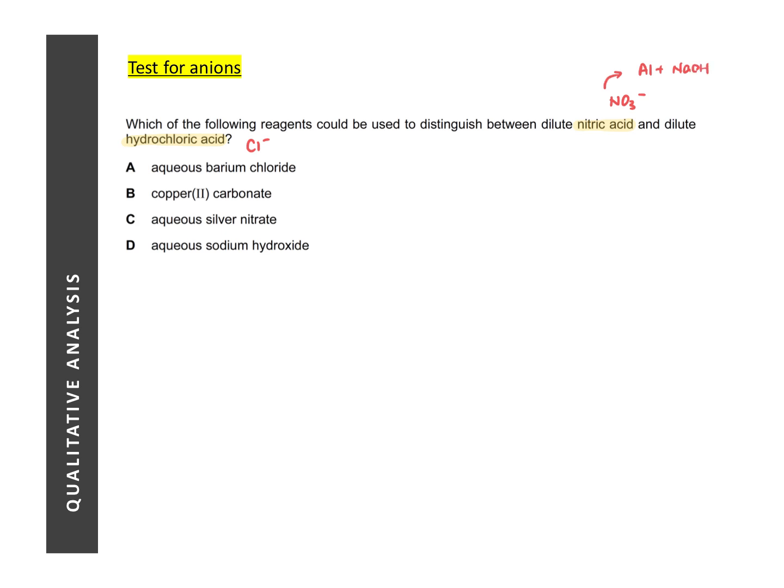For the test of chloride, we need to add nitric acid followed by silver nitrate. So if you look at the option, if any of the option corresponds to one of this test, then it will be the correct answer. And over here, we are looking at silver nitrate, which will form a white PPT with hydrochloric acid, but no PPT with nitric acid.